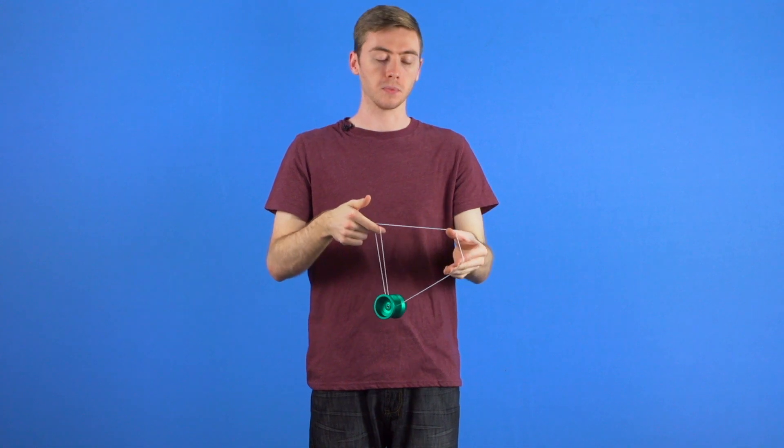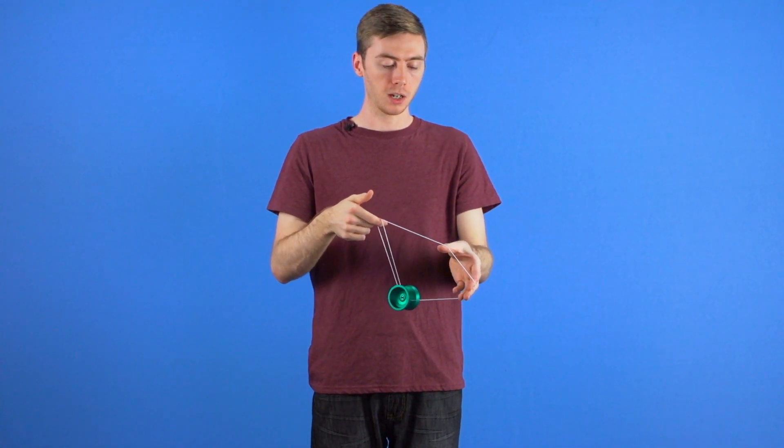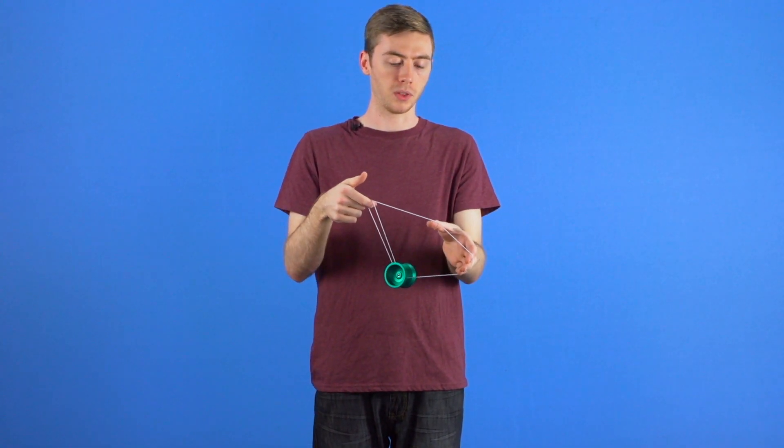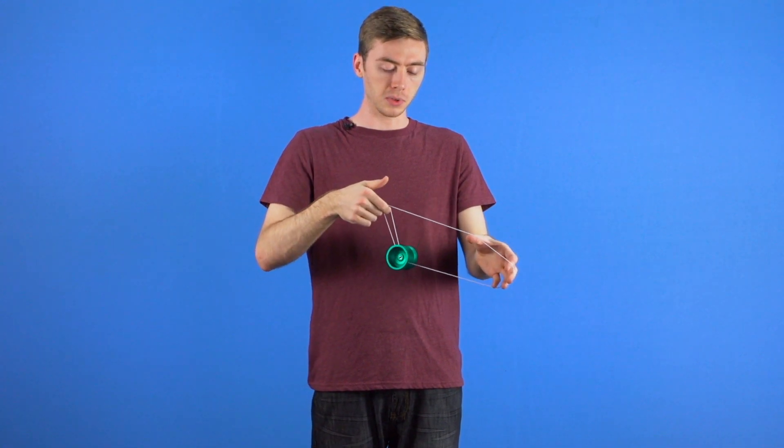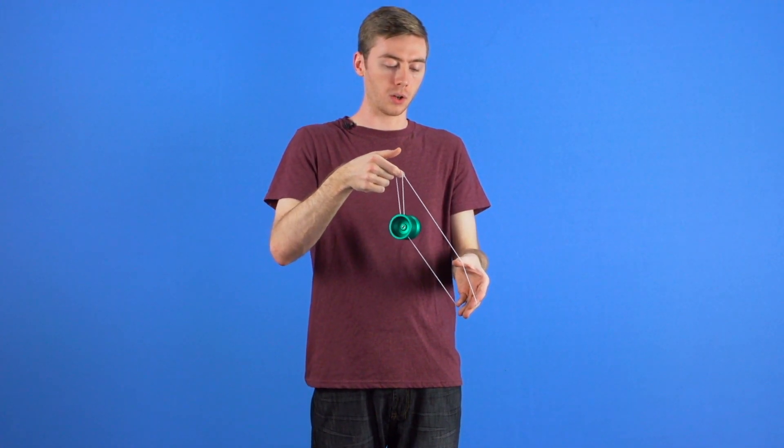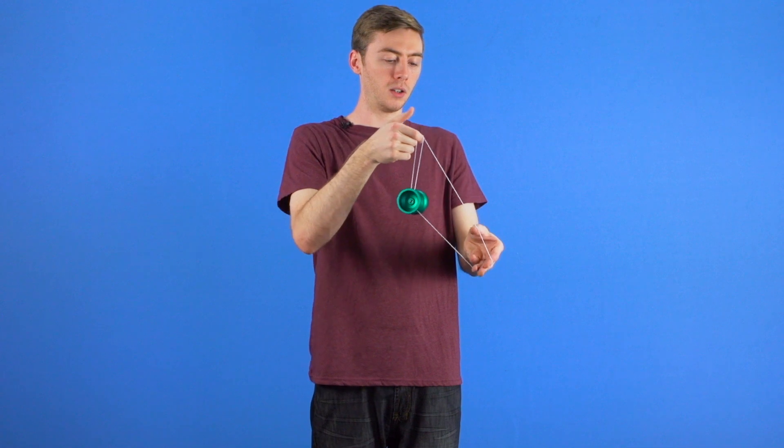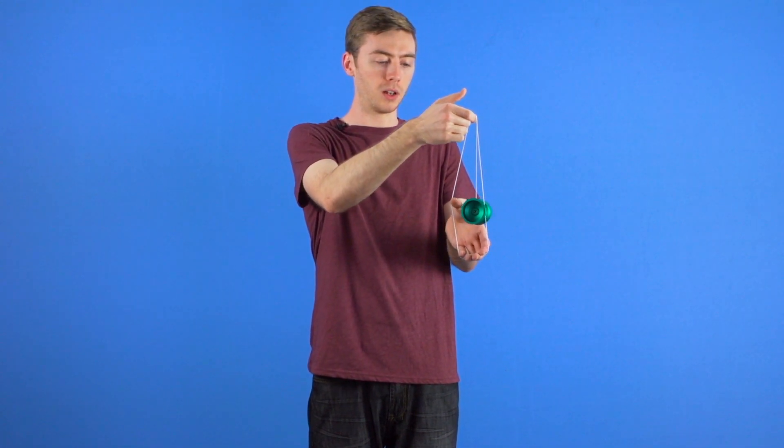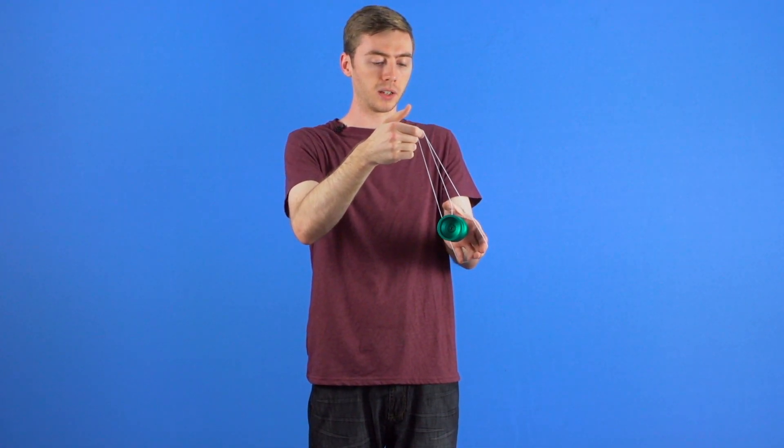To do this, you're going to start with your thumb up and you're going to make a chopstick kind of shape with your non-throw hand. Similar to the over-under boing, you're going to start with the yoyo over your thumb and you're going to use the momentum to drop the yoyo in between your thumb and your fingers like so.